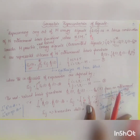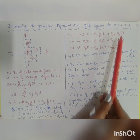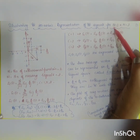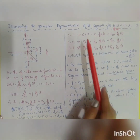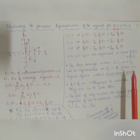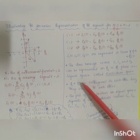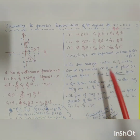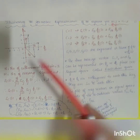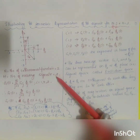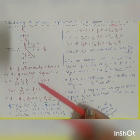To illustrate geometric representation of signals, consider n=2 and m=3. N=2 means we have phi_1 and phi_2 as basis functions, and m=3 means we have three message signals s1, s2, and s3. The formula s_i(t) = summation from j=1 to N of s_ij × phi_j(t) applies, where i = 1, 2, 3 since m=3, and j goes from 1 to 2 since n=2.